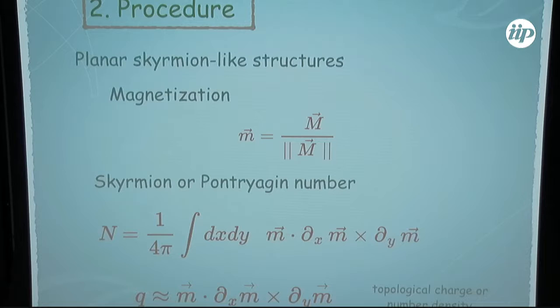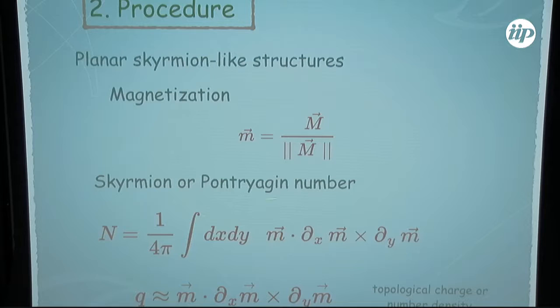Moving to the planar skyrmion-like structure: skyrmions are characterized by a magnetization which is a constant-modulus vector. I normalize it and define the skyrmion or Pontryagin number — defined this way — and I use this part which people call the topological charge or the skyrmion number density. This is the topological charge density or the skyrmion number density, which I will focus on.